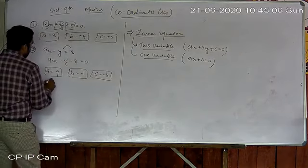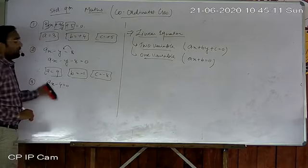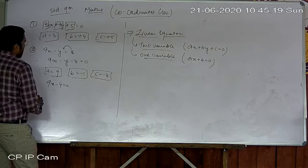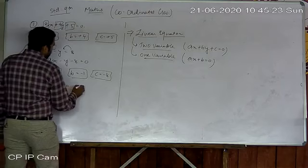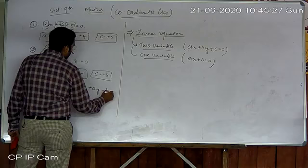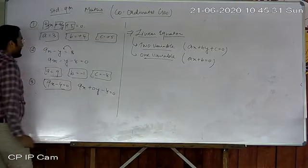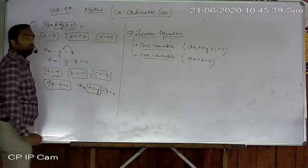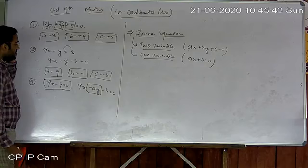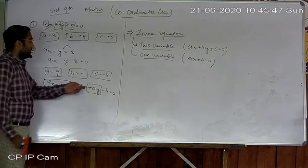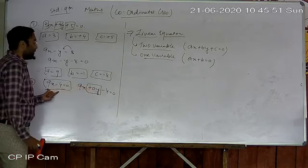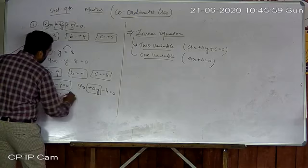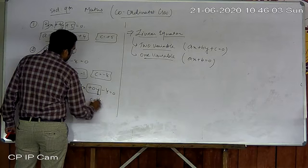Another example: 9x − 4 = 0. Here there is no variable y. So as per standard formation, I write it as 9x + 0y − 4 = 0. Whenever the variable y is not available, you put 0y. So a is 9, b is 0, and c is −4.